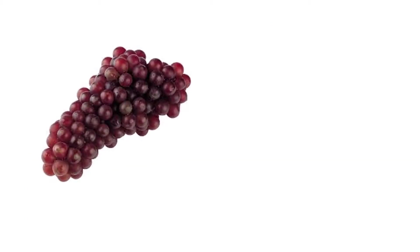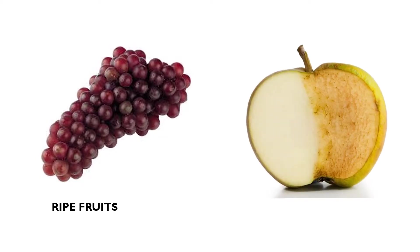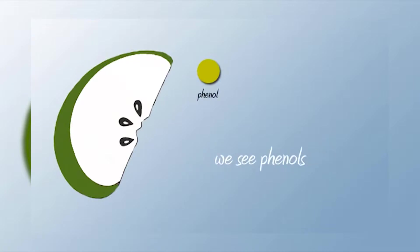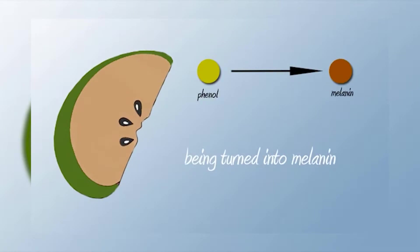Enzymatic browning results due to the action of enzymes seen in ripe, cut, and injured fruits. The enzyme otherwise intact within the tissue comes in contact with the phenol oxidases, which triggers the reaction towards enzymatic browning.